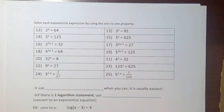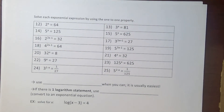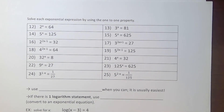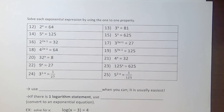The first half of the next practice page says to solve each exponential equation using the one-to-one property, meaning you'll be able to rewrite each equation with the same base on both sides. We're going to go through and rewrite all of them together before thinking about finishing and solving. I'll do the even-numbered problems in the left column with you, then pause for you to do the right column.